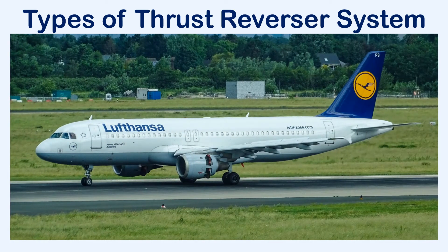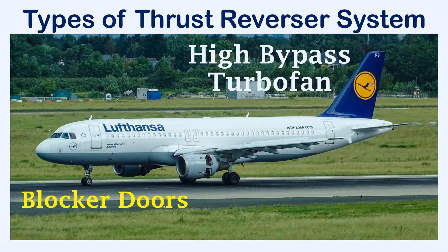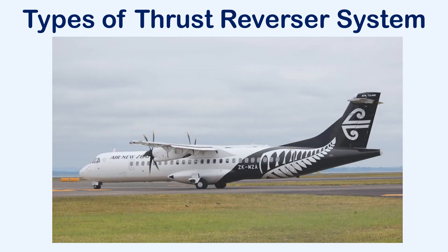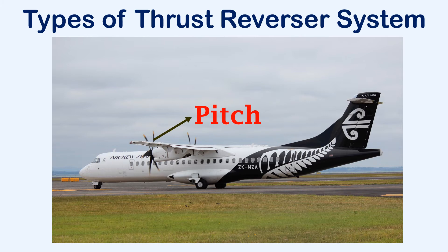In high bypass turbofan engines, blocker doors or translating sleeve type thrust reversers are installed. In these reversers, only the bypass air is pushed forward and the air from the core section continues to be pushed backward. In turboprops, reverse thrust is created by adjusting the pitch of the propeller to change the airflow direction.